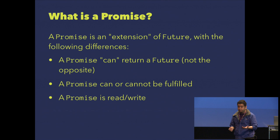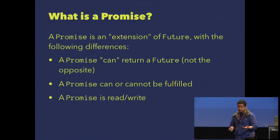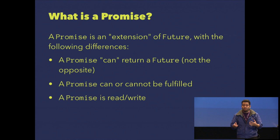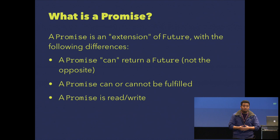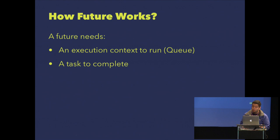A promise is an extension of futures. With a future, you can only read the result. With a promise, you can write inside — you can create one future with a lot of code and return five or six promises in the same chunk of code.